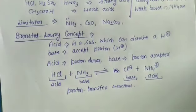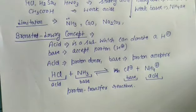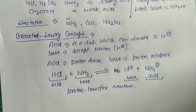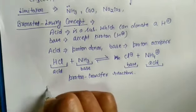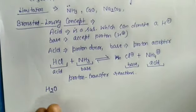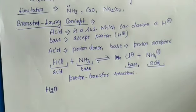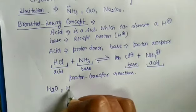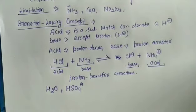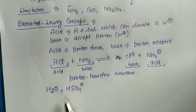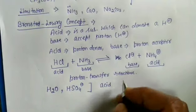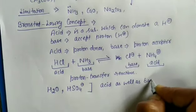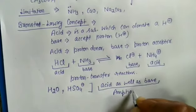There are many substances — such as water and bisulfate ion (HSO₄⁻) — capable of both donating and accepting protons. Water can donate a proton to form hydroxyl ion, and it can also accept a proton to form hydronium ion. Similarly, HSO₄⁻ can accept a proton to give sulfuric acid or donate a proton to form sulfate ion. Substances that behave both as acid and as base are called amphoteric substances.